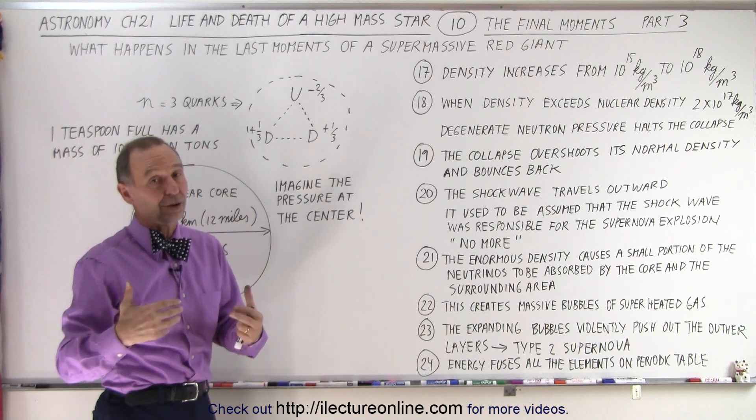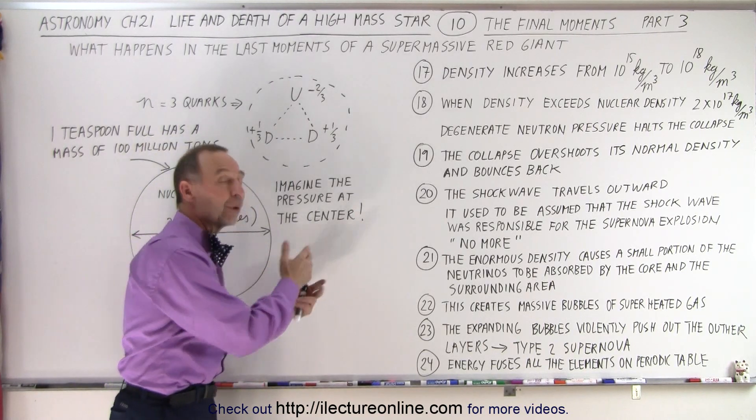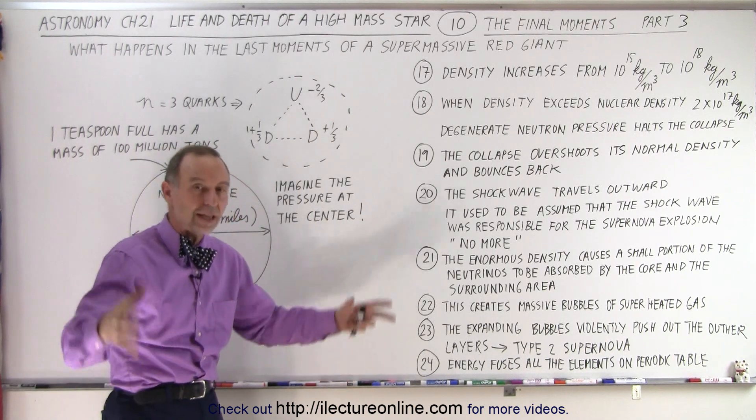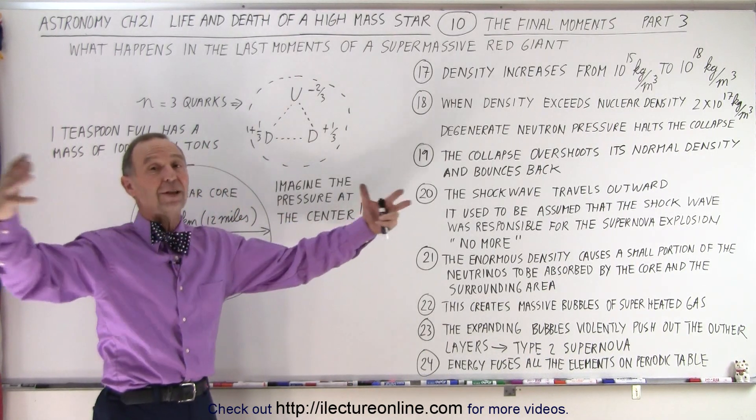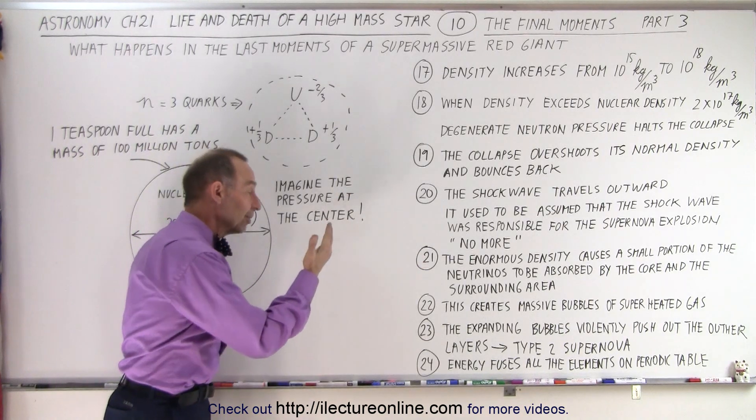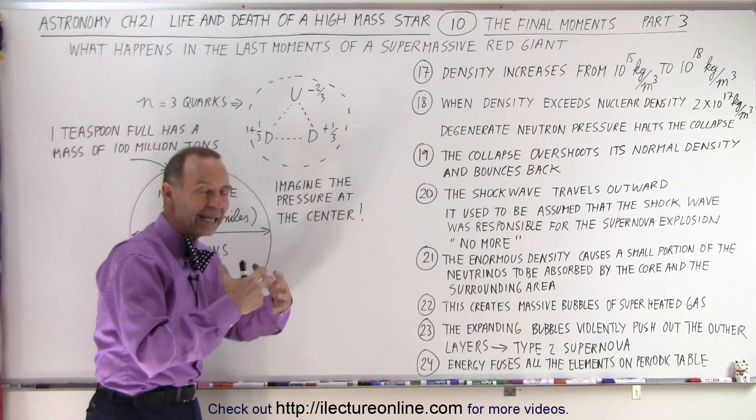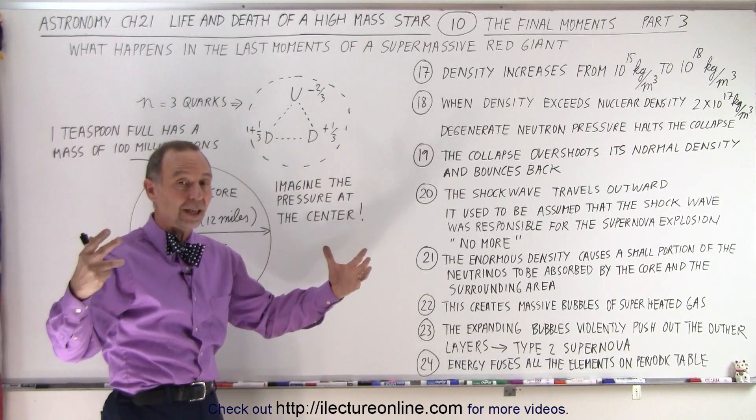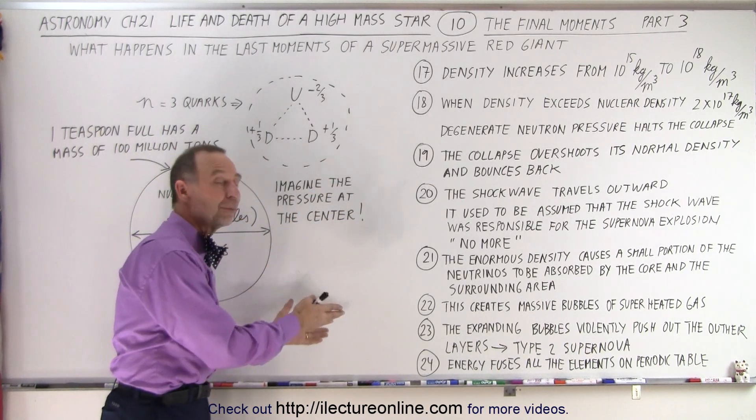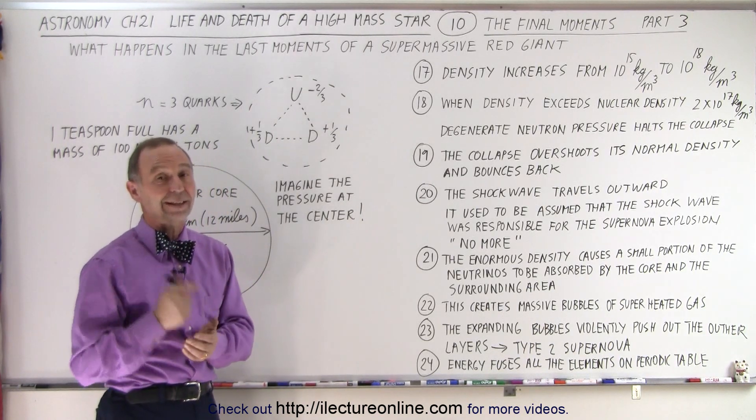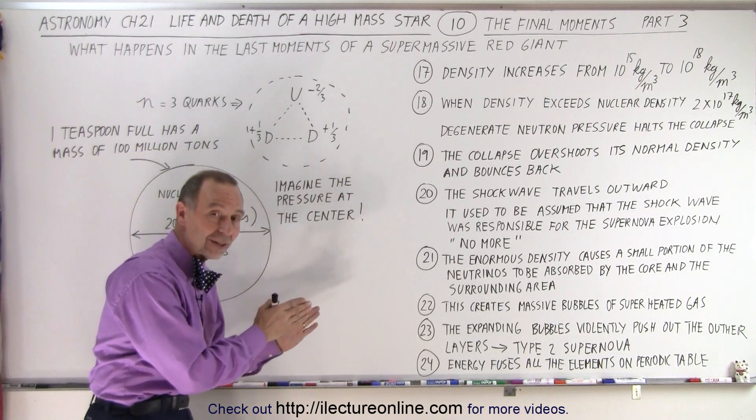Which was formed by one of those supernova explosions. In other words, the material that makes up the Earth, that makes up our bodies, that makes up everything we see around us, was created during that massive explosion about 4.5 billion years ago, seeding the nebula from which our sun and our planets were made, with all the material necessary to make terrestrial planets and us.